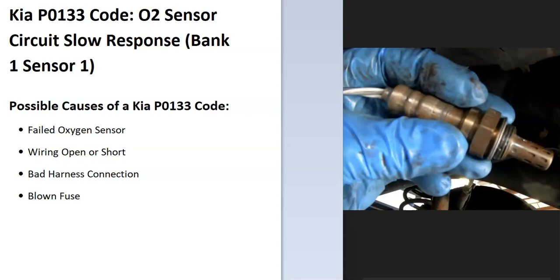So what is a Kia P0133 code? Well, it's an O2 sensor circuit slow response bank one sensor one. And what does this mean? Well, the onboard computer uses sensors located on the exhaust to know how much oxygen has been burnt off during combustion, and it's seen a problem with one of these.